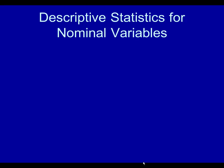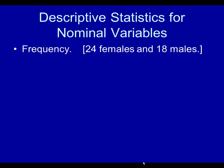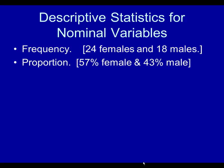Descriptive statistics for nominal variables include frequency. For example, we have 24 females and 18 males in this hypothetical study I just threw at you right here. Proportion: 57% of the sample are female, 43% male.